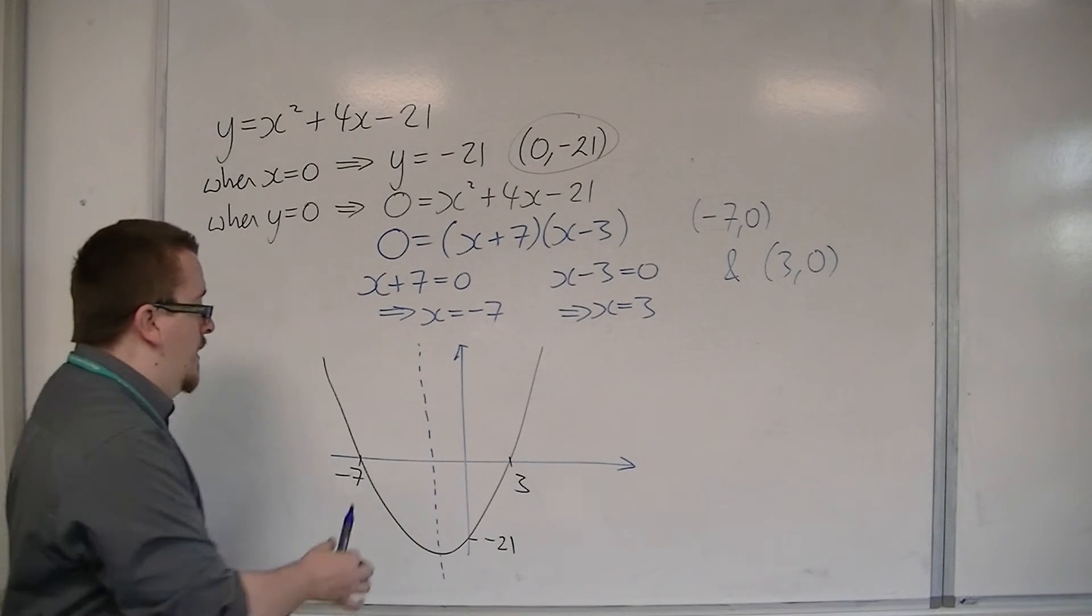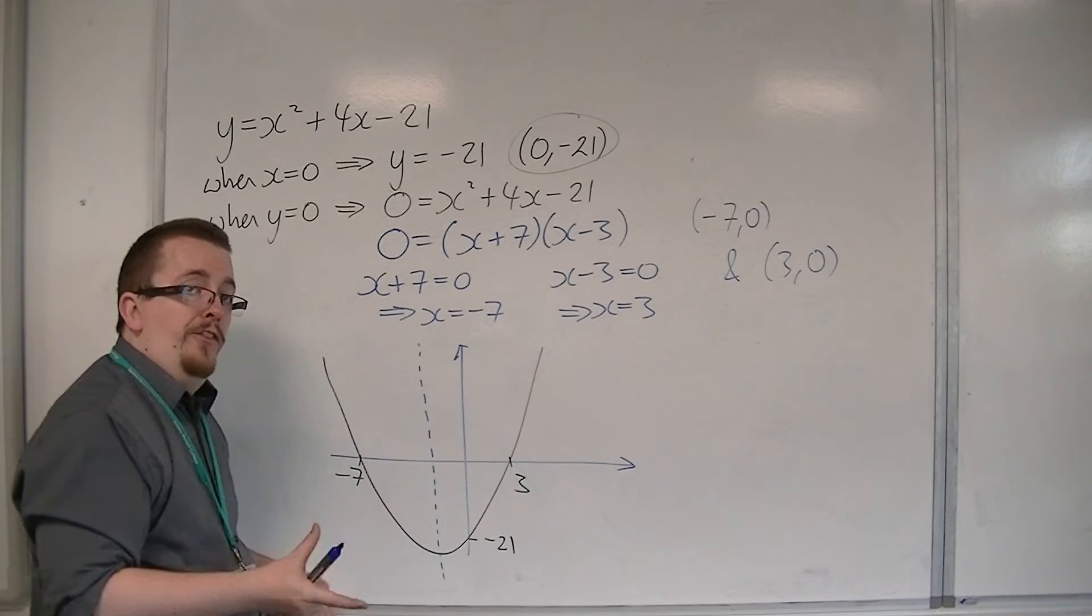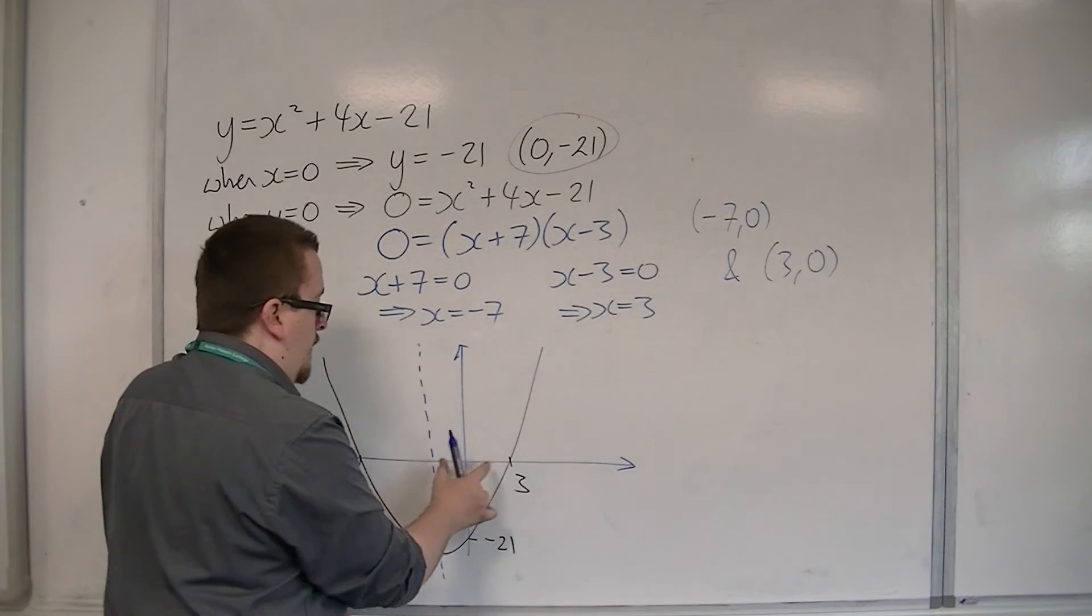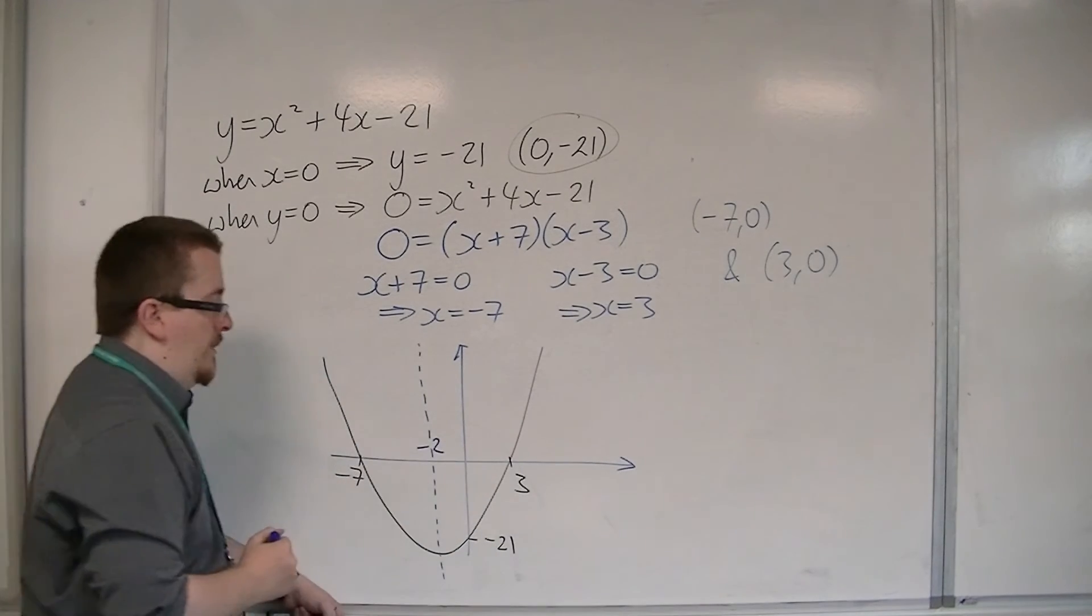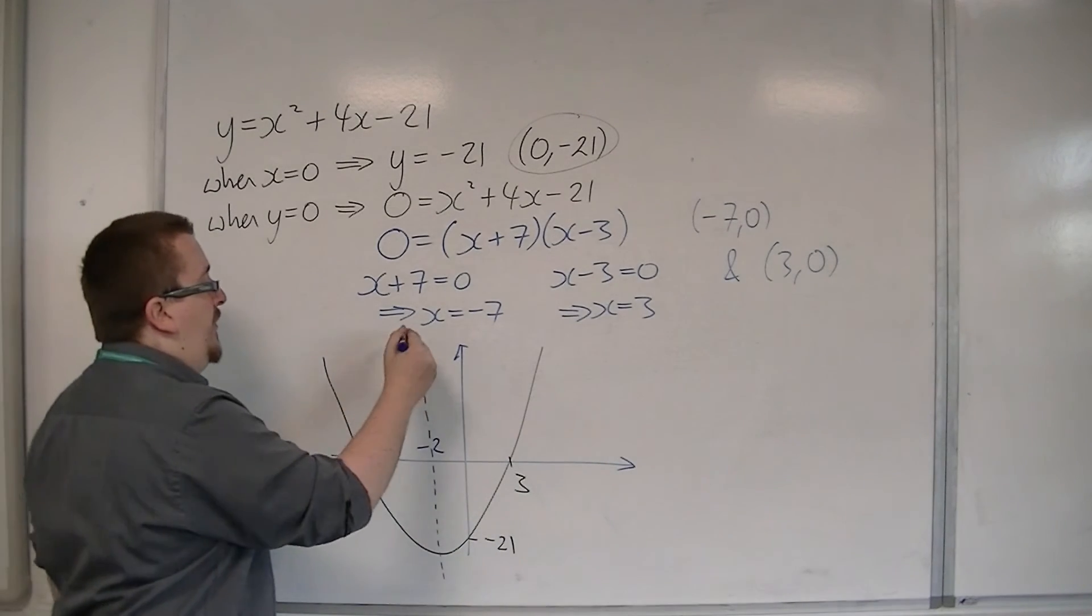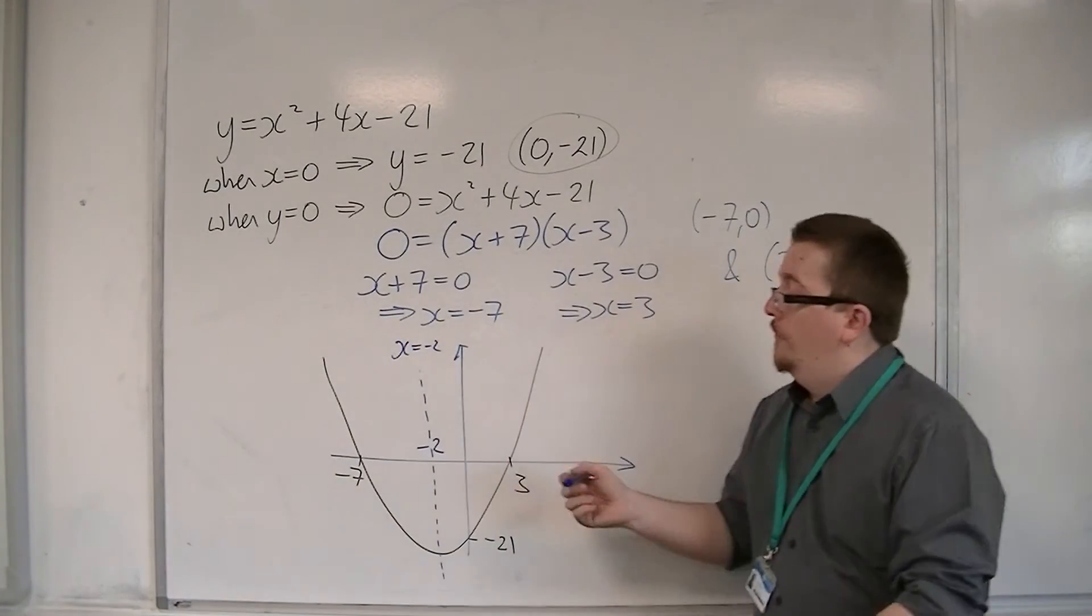Okay? So if you're looking for the average of those two points, it would be minus 2.5, that unit's either side. So x is equal to minus 2 would be the line of symmetry of this curve.